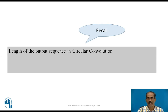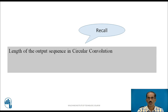Let us recall what is the length of the output sequence of the circular convolution. The length of the linear convolution output is equal to the length of the first input sequence plus the length of the second input sequence minus 1. Whereas, circular convolution will have an output length equal to the length of the input sequence. One more condition is that the inputs must both have the same length, then only you can perform the circular convolution.